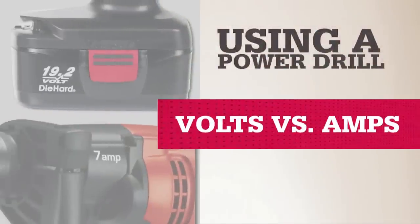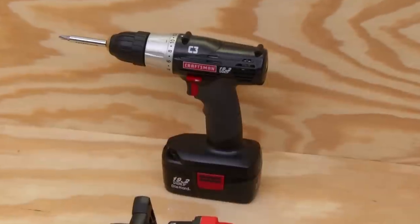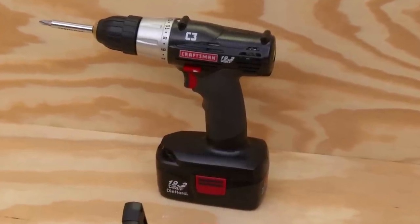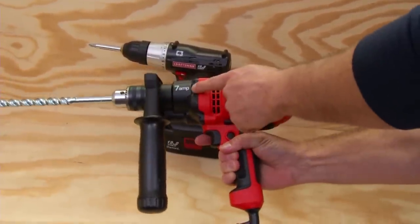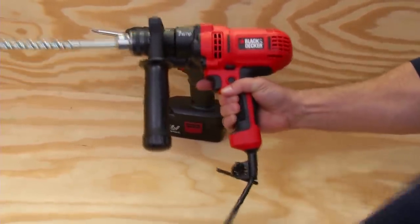Volts and amps indicate how powerful the drill is. On a cordless drill, this is expressed by the volts. On a corded drill, look at the amps. A higher number usually means heavier duty and heavier to hold.